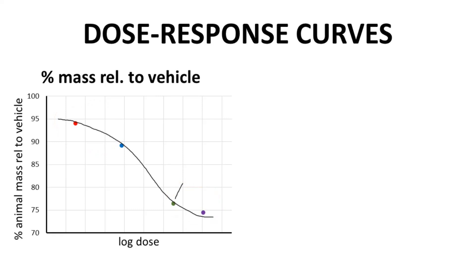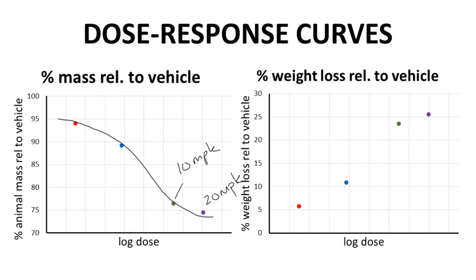Going from 10 mg per kg to 20 mg per kg gives some decrease in mass, but it seems that the effect is starting to plateau. We can change the y-axis to report percent weight loss relative to the vehicle group. The curve is now an upward sigmoid, but ultimately communicates the same information. The lower doses give less weight loss, and a 20 mg per kg dose likely gives close to the maximal response.